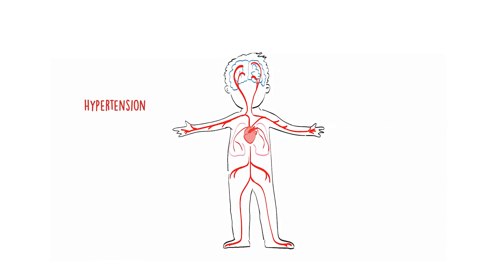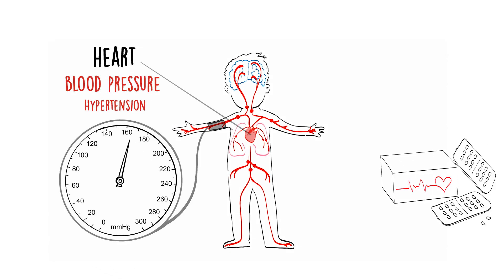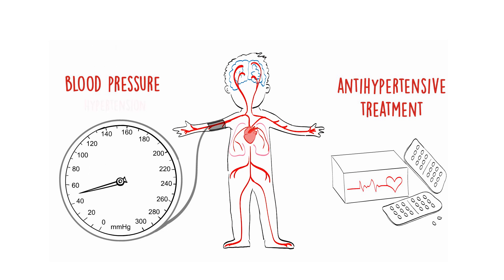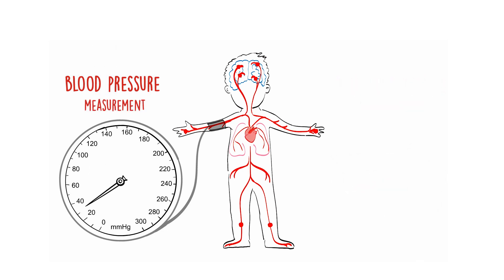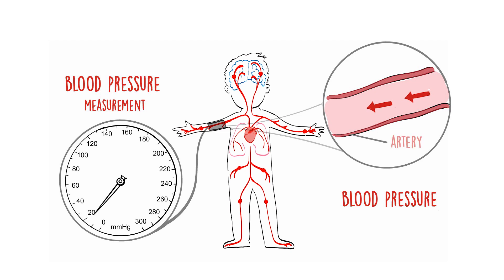Hypertension is a condition that occurs when your blood pressure increases to unhealthy levels and requires treatment to control it. Blood pressure is a measurement of the force of the blood flowing through the arteries, which carry blood from the heart all around the body.